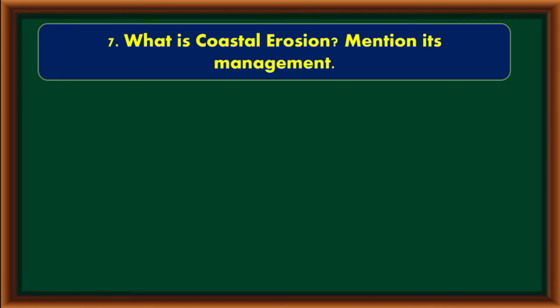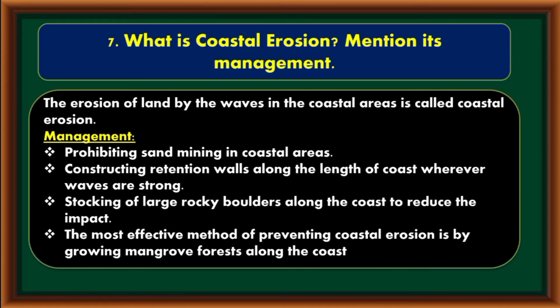What is coastal erosion? The erosion of land by the waves in the coastal areas is called coastal erosion. Management includes: prohibiting sand mining in coastal areas, constructing retention walls along the coast wherever waves are strong, stacking large rocky boulders along the coast to reduce the impact. The most effective method of preventing coastal erosion is by growing mangrove forests along the coast.